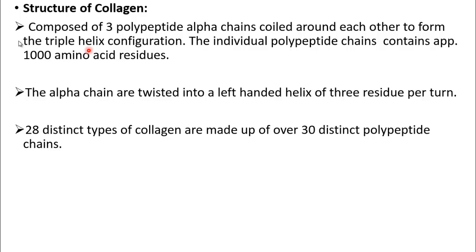The structure of collagen basically consists of three polypeptide alpha chains, which are coiled around each other to form the triple helical configuration. The individual polypeptide chains are mainly 1000 amino acid residues long. We should note that the term 'alpha chain' is different from 'alpha helix' — the secondary structure element — and we will describe this difference in the next few slides.